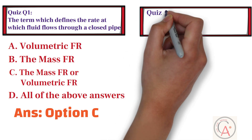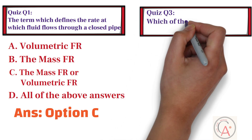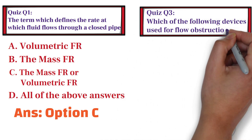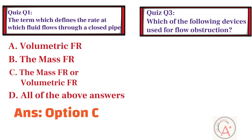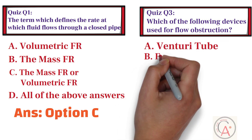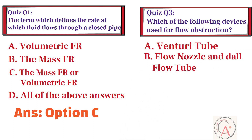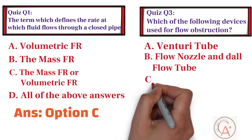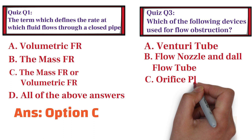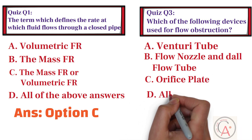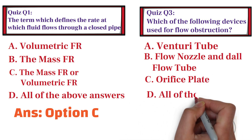The third question is: which of the following devices is used for flow obstruction? Option A: Venturi tube. Option B: flow nozzle and all flow tube. Option C: orifice plate. And option D: all of the above answers.